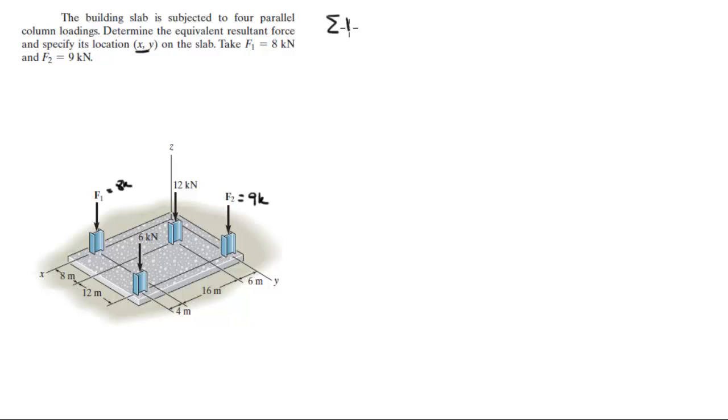So, you know that the sum of the forces in the z is equal to negative F1 minus F2 minus 6 minus 12. And this adds up to be negative 35 kilonewtons. So the resultant force is 35 kilonewtons.